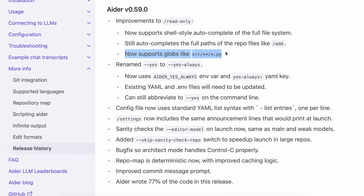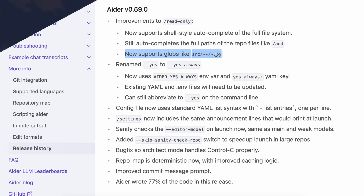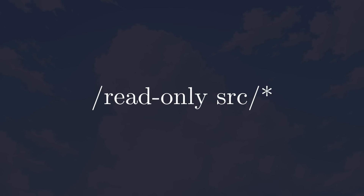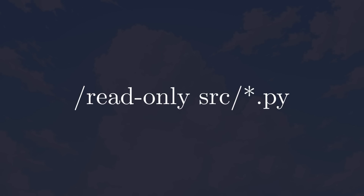Apart from that, there's now support for Globs. So if you want to tell Aider not to write to an entire directory, you can just add the folder name and a wildcard character to Read Only, and it will handle it. You can also prevent it from editing any Python file or anything similar. That's super cool.